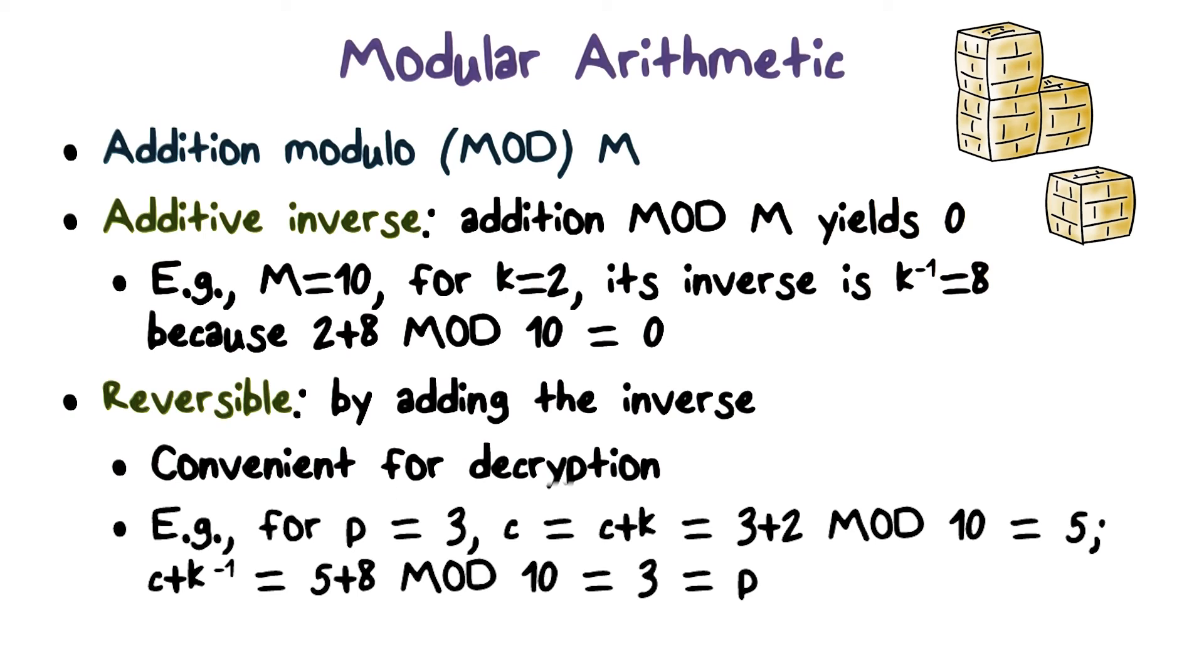This is how we can do decryption: by using the same process as encryption, but instead of using the key, we use its inverse. We take advantage of the fact that under modular addition, each number has an inverse. Therefore, each key has an inverse, and we use the inverse of the key for decryption.